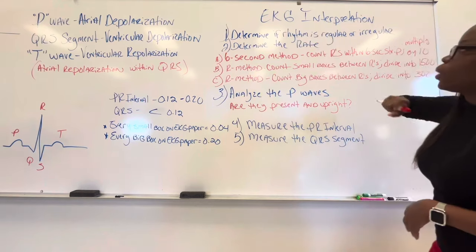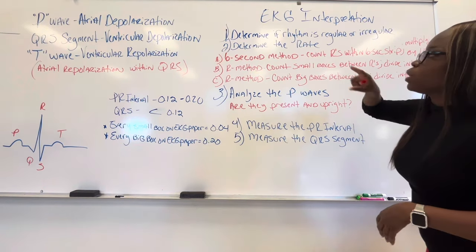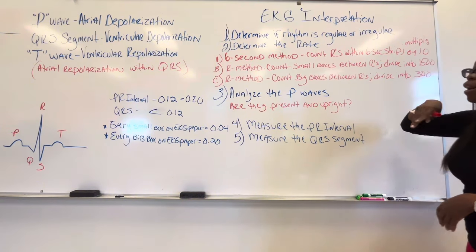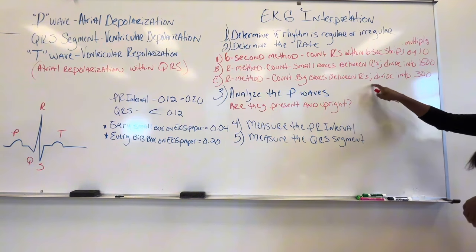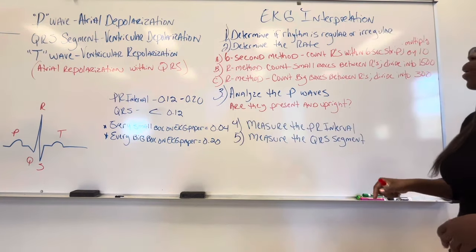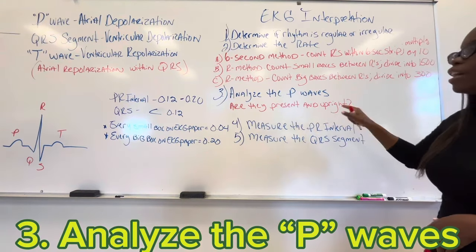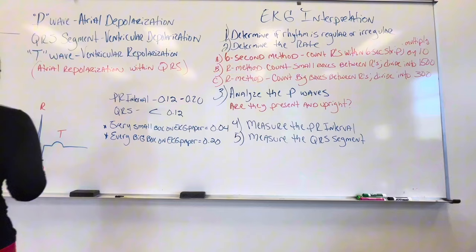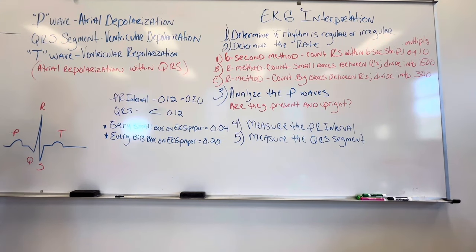So again, first step is determine whether the rhythm is regular or irregular. The second step is going to be determine the rate using one of these methods. I tend to go for the big box and then divide it into 300. And then the next thing you want to do, you want to analyze the P waves. You want to ask yourself, are they present and are they upright? So you want to look, do you see a P wave before every QRS? Okay. We do. Now we see that every P wave is present and every P wave is upright. Now, if the P wave is absent or maybe it's present, but it's not upright, now that indicates some other problems that we're going to talk about in another video. So that's going to be the third thing.